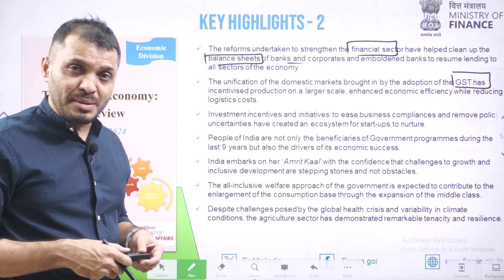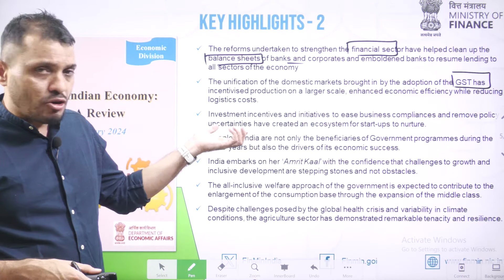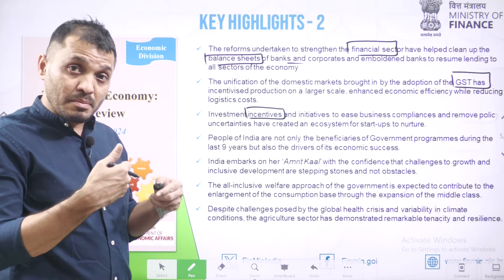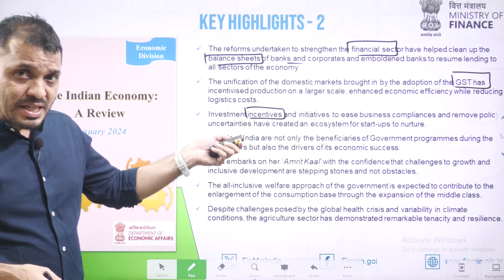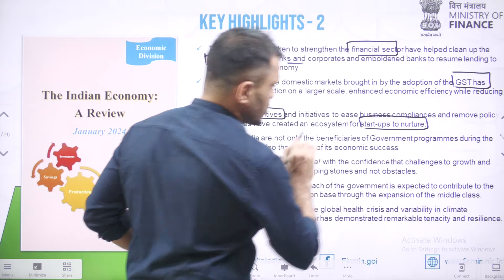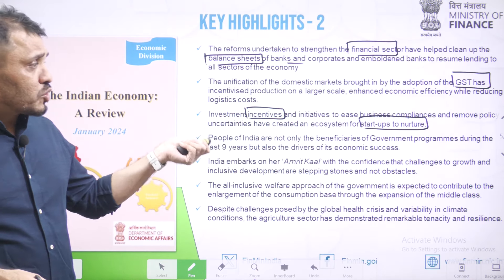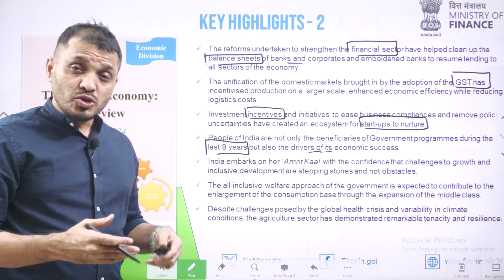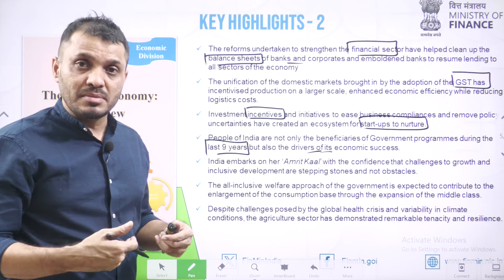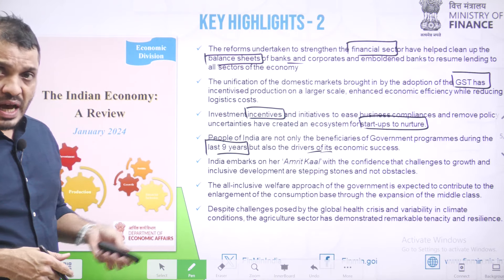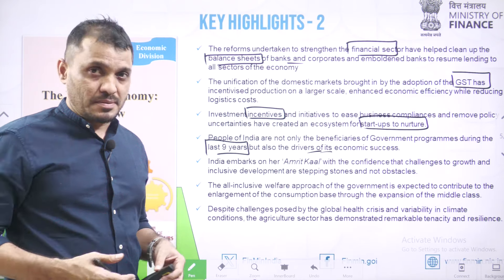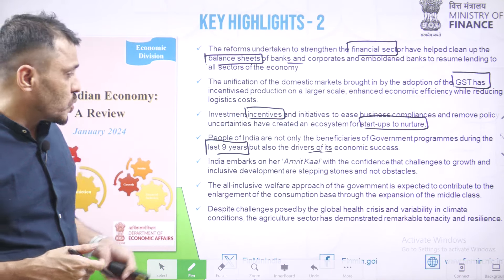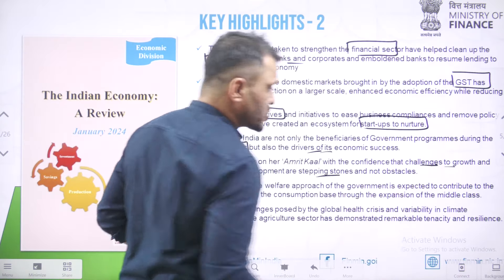To improve the ease of doing business, the government introduced various incentives, decriminalized some minor offenses in the Companies Act, and created an ecosystem to encourage startups. The people of India are not only beneficiaries of government programs — over the last nine years, they are also becoming drivers of economic growth through government welfare programs. For the next 25 years, as India moves toward its Amrit Kaal vision, challenges to growth and inclusive development are being treated as stepping stones rather than obstacles. All-inclusive welfare programs are contributing to an increased level of consumption base.